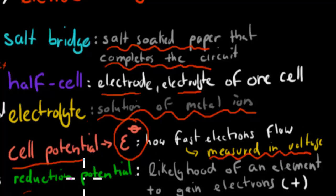Reduction potential, that's how likely an element is to gain electrons. So the likelihood of an element to gain electrons. And generally if it's plus, that means that actual element likes to gain electrons. So for example, copper was plus because it likes to gain electrons. Whereas zinc was minus because it doesn't like to gain electrons as much as copper does.